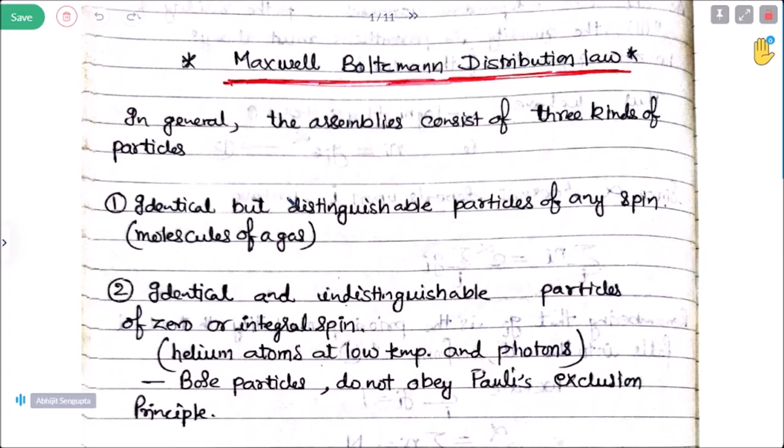We are studying Maxwell's position distribution law in statistical mechanics. We will study three types of distribution laws, one of which is classical theory. Maxwell-Boltzmann distribution law is classical theory, and quantum mechanically, Fermi-Dirac and Bose-Einstein statistics or distribution laws are in that category.